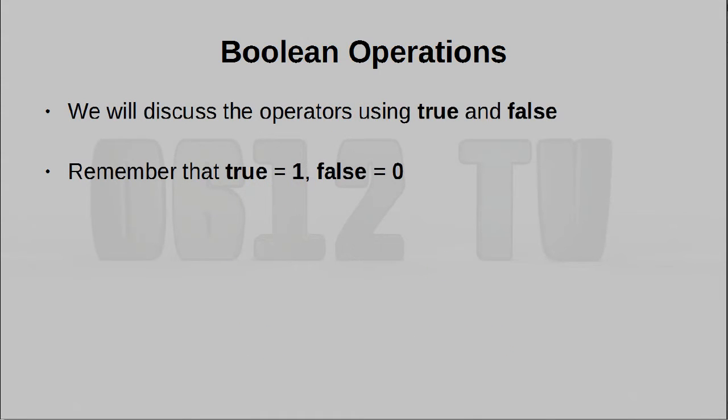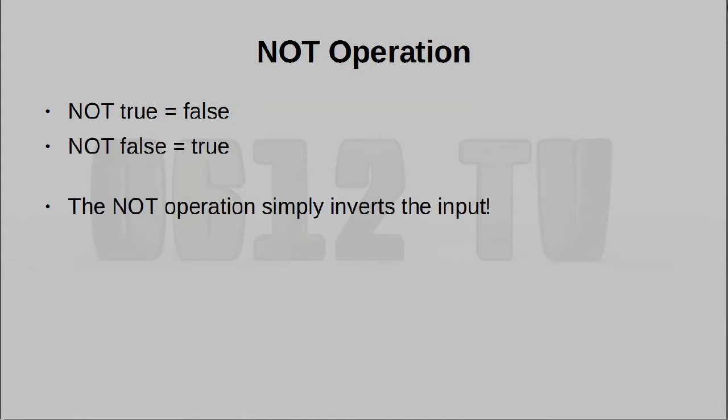We're going to be explaining them in a context of true or false. Of course, true corresponds to one, false corresponds to zero. Now when you say something is not true, that of course means it's false. If it's not false, then it's true. So NOT simply inverts the value of the input.